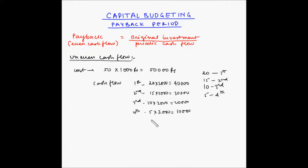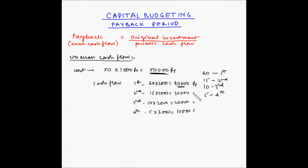We need to find out in how many days he recovers the original investment of 50,000 rupees. At the end of the first day he has 40,000 rupees. At the end of the second day he has 40,000 + 30,000 = 70,000 rupees. So he has recovered his entire original investment by the second day.